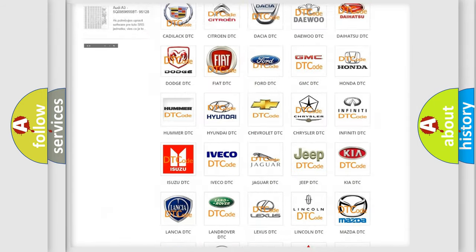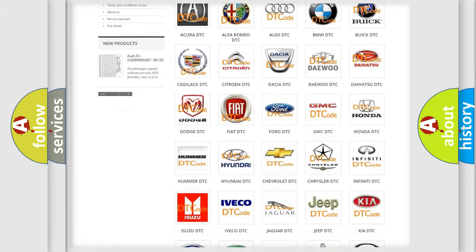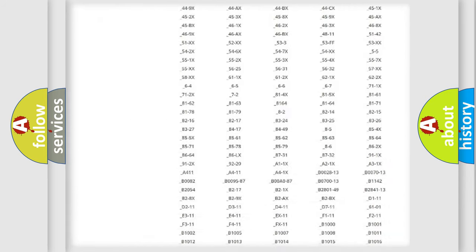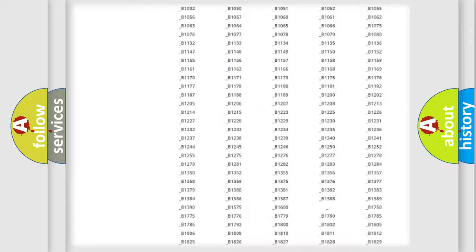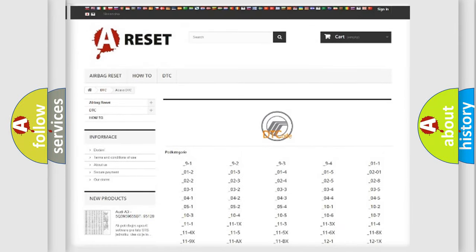Our website airbagreset.sk produces useful videos for you. You do not have to go through the OBD2 protocol anymore to know how to troubleshoot any car breakdown. You will find all the diagnostic codes that can be diagnosed in Mercury vehicles, and many other useful things.